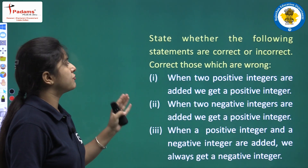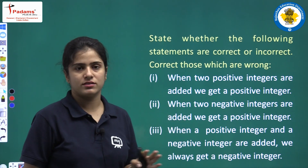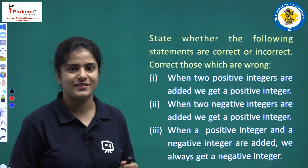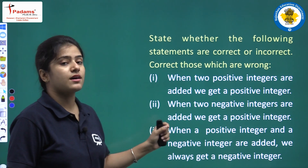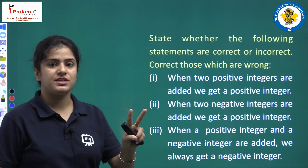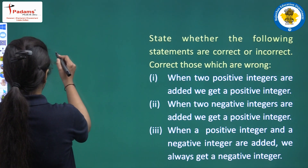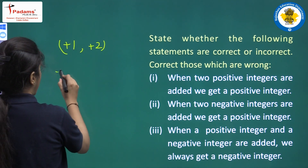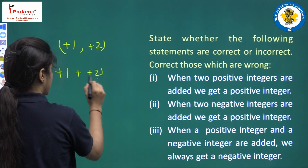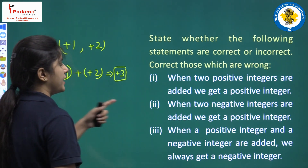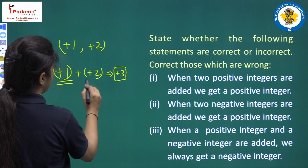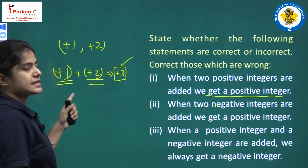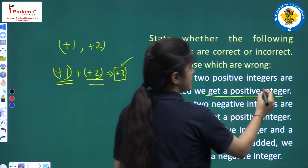Next, state whether the following statements are correct or incorrect and correct those which are wrong. First part: when two positive integers are added, we get a positive integer. For example, plus 1 plus plus 2 equals plus 3 — we get a positive integer. So this statement is true.